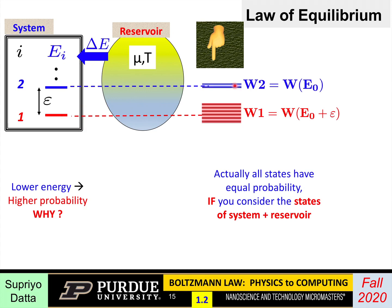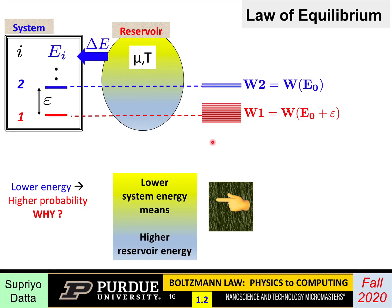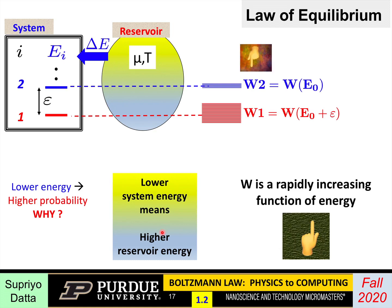Similarly, if the system is in state two, the reservoir has W2 number of states. The system in general has equal probability for all composite states, but state one corresponds to many more reservoir states than state two. Why? Because when the system has lower energy, the reservoir has higher energy — together they always have the same total energy E0 plus ε. So when the system has a little more energy, the reservoir has a little less. The two key points are: lower system energy means higher reservoir energy, and if the reservoir has more energy, it can access more states.